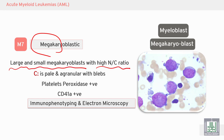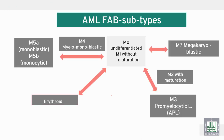M7 is megakaryoblastic leukemia, with large and small megakaryoblasts characterized by a high nuclear-to-cytoplasm ratio — large nucleus, scant cytoplasm, with no granules. It is characterized by the immunological marker CD41a, and immunophenotyping with electron microscopy is essential to diagnose this type of leukemia. The AML FAB subtypes are M0, M1, M2, M3, M4, M5, M6, and M7.